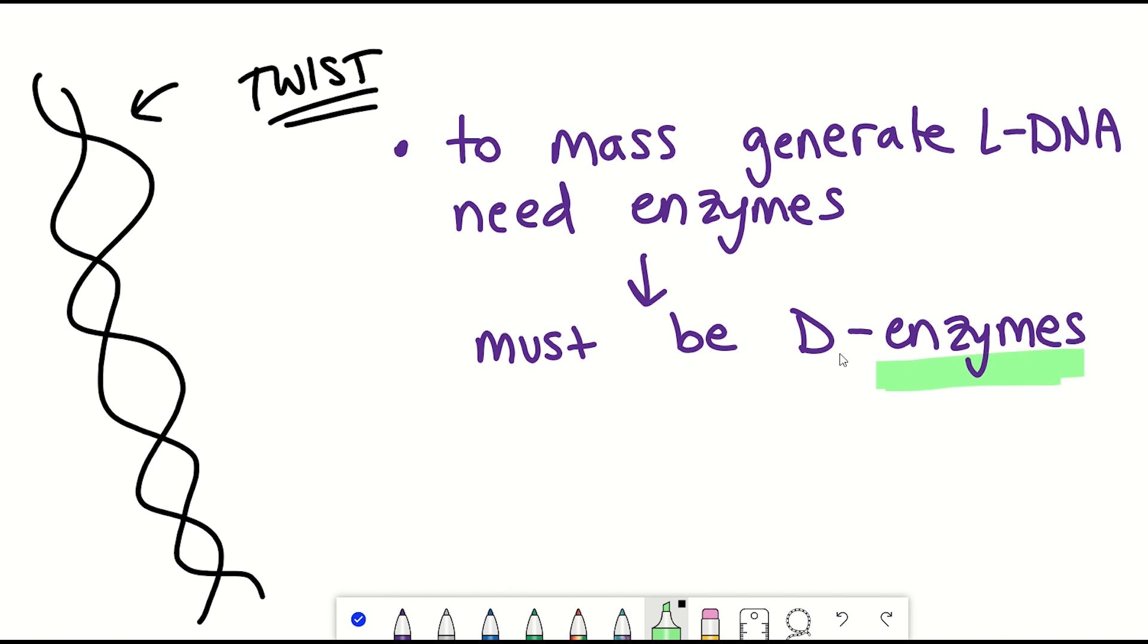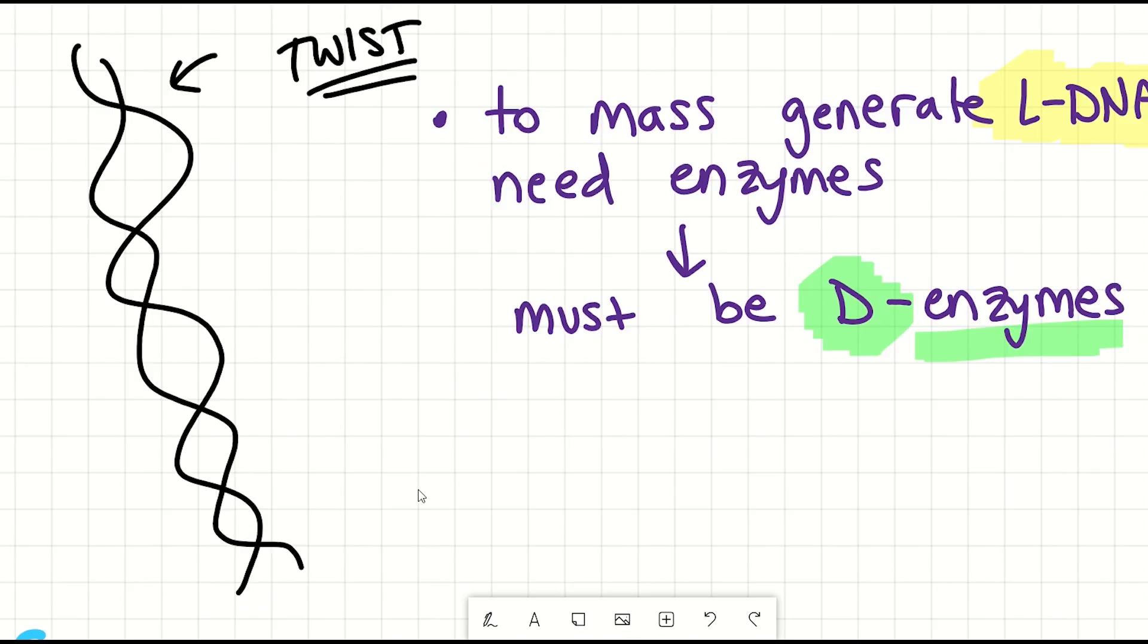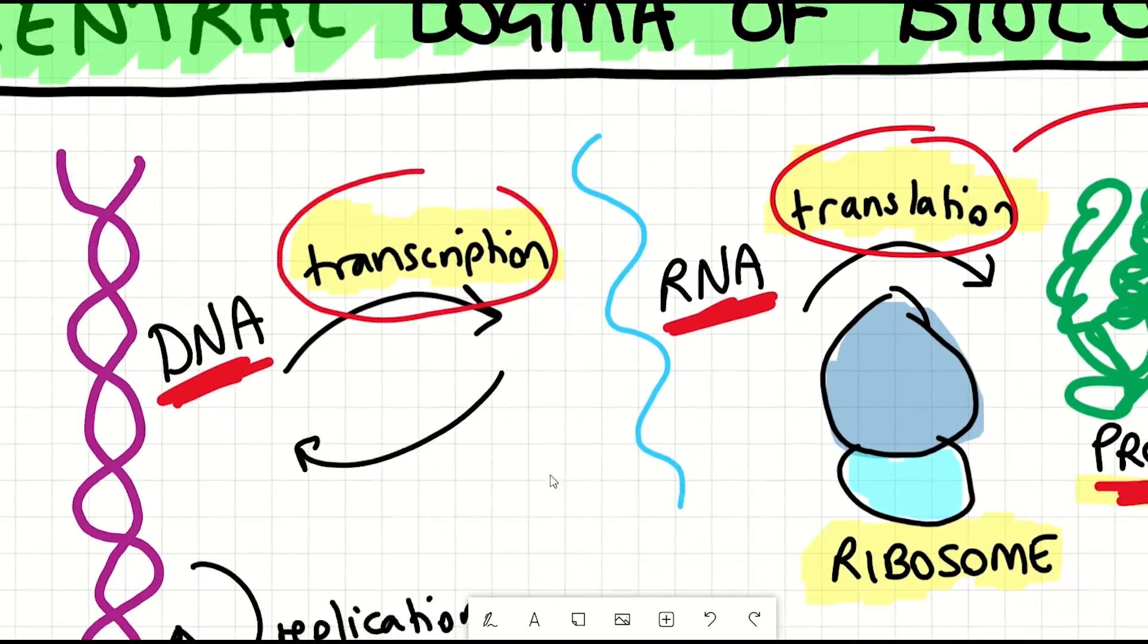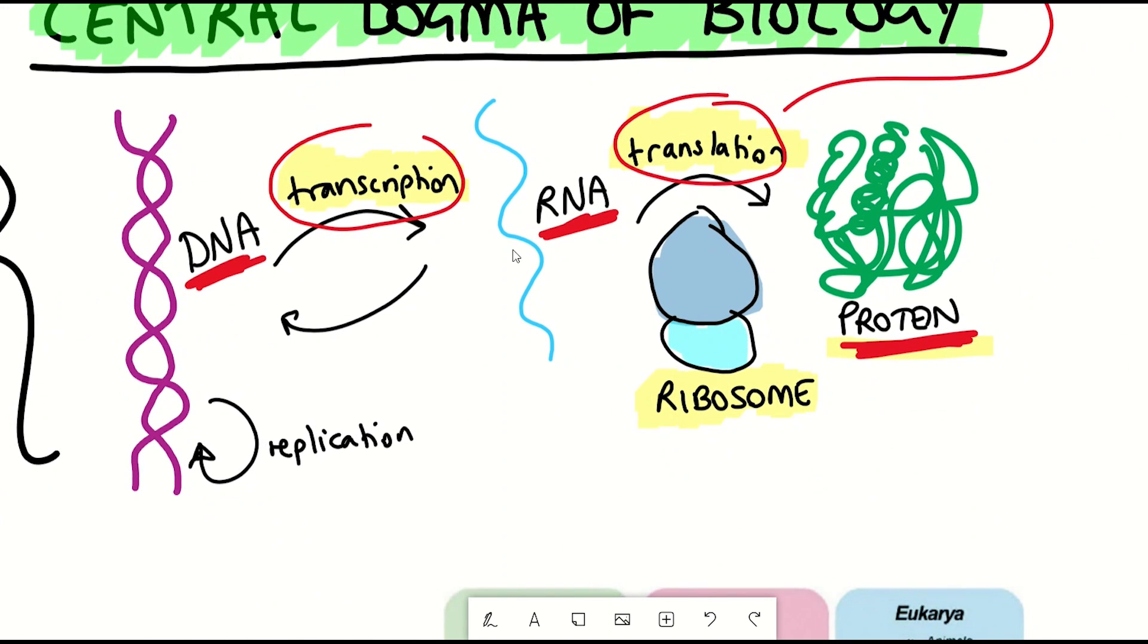And so these enzymes are proteins. And so these proteins have to therefore be the D-proteins, not the L-proteins, because we're in the mirror world. But to get to the proteins, we need to have the DNA that encodes the proteins, that can then go to the intermediate of RNA, that can then get translated to produce the protein.